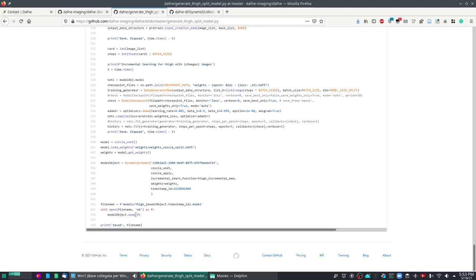Finally we call the model object dump function to serialize the object and save it as a .model file. So now this dynamic model, this model object, will be independent from the Python script that generated it and can be deployed and loaded into Daphne separately.